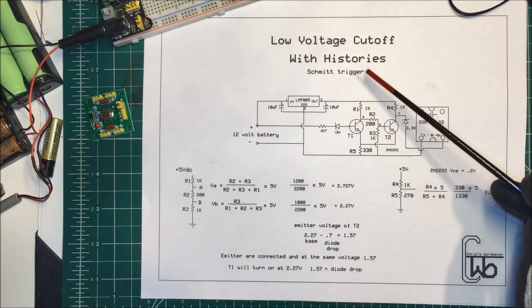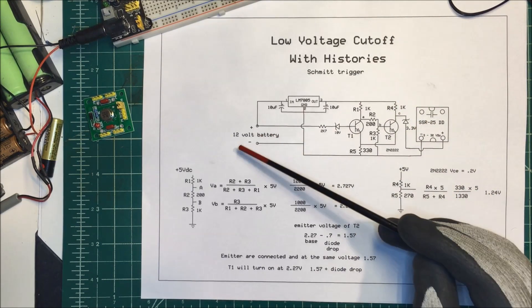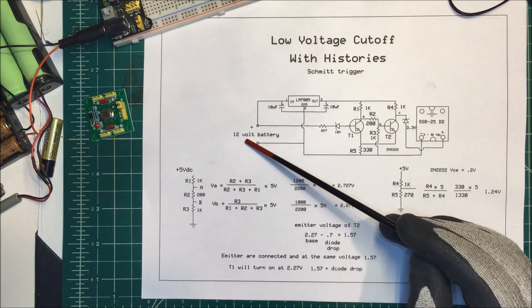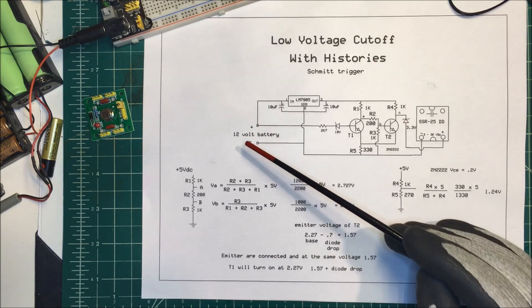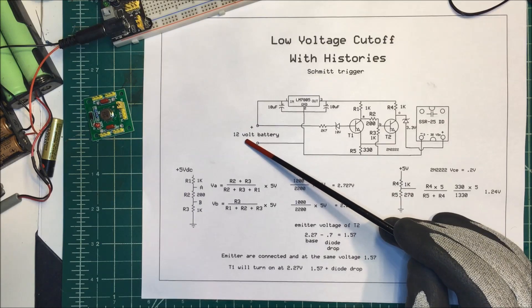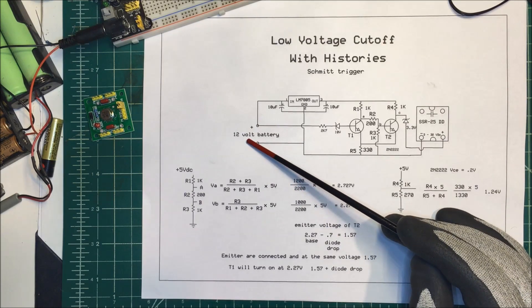Let's talk about low voltage cutoff with hysteresis. I've got a 12 volt battery and I want to be able to disconnect the load when the voltage drops down to say 10.5 volts and then be able to automatically turn the load back on if the voltage rises up to say a little bit over 11 volts.